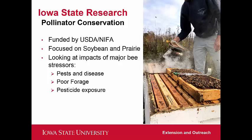The second P is poor forage — we're looking at the availability of flowers providing nectar and pollen resources. In a landscape that's mostly corn and soy, there's not a lot of floral diversity, and depending on the time of year there may not be much availability for bees. The third P is pesticide exposure — we're looking at how farmers treating their fields with insecticides negatively impacts honeybees and the abundance of native bees.